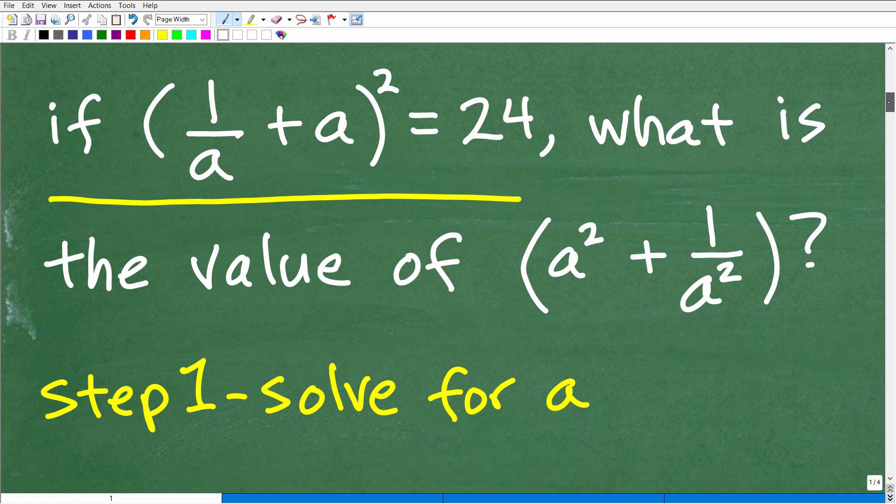So here is the problem. Okay, so we have if this expression right here, (1/a + a)² = 24. So obviously we have an equation here. So if this equation, given this equation, what is the value of this? Now, you can see here that this question is asking us the value of a² + 1/a². Well, how do we get the value of this? Well, we're going to have to have this value for a.